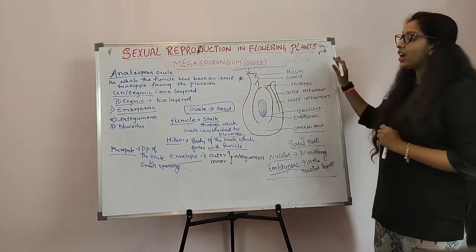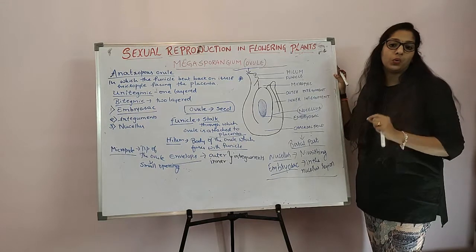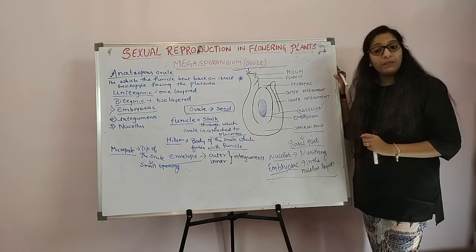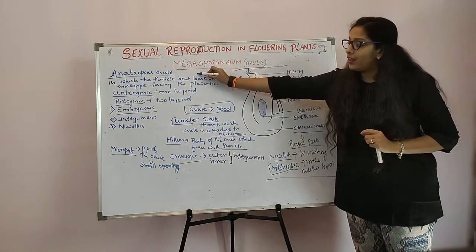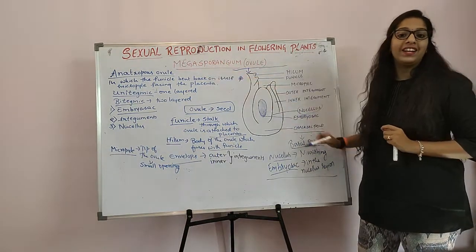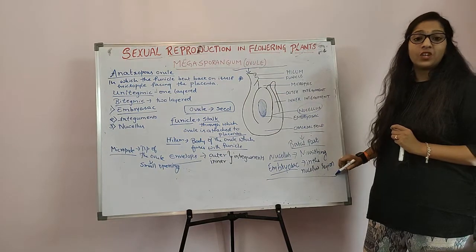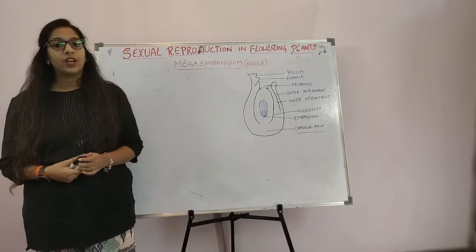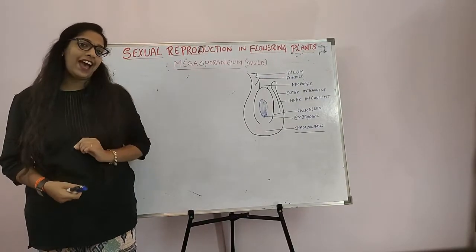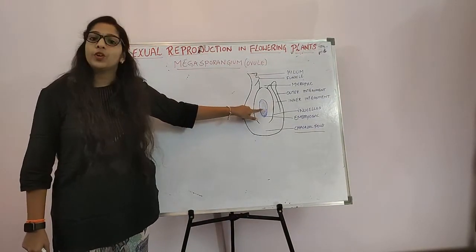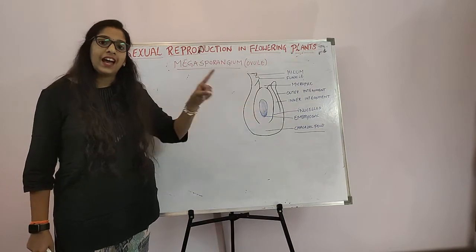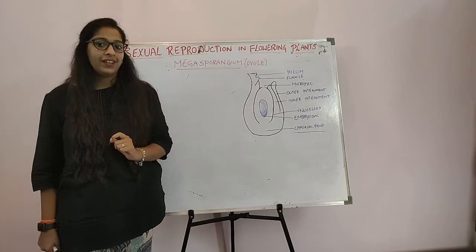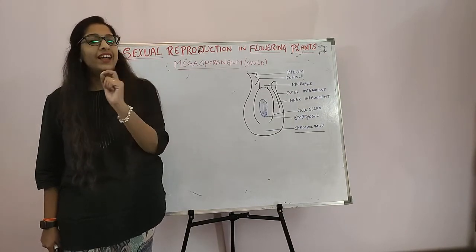So this is the structure of the Anatropous Ovule, which you have to answer for five marks. The ovule has a single Embryo Sac, and how it is formed — that is by reduction division, and the process is known as Megasporogenesis.